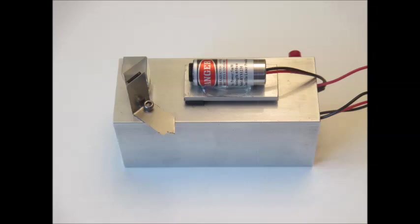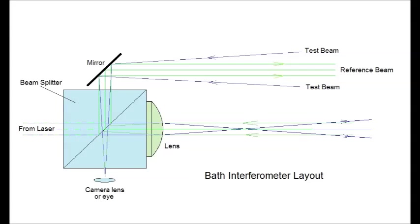I use a 10 millimeter beam splitting cube from Surplus Shed and a 10 millimeter focal length plano-convex lens. You can get those for under $22 from Surplus Shed. I got a 650 nanometer laser diode module from eBay for $2 and some change for the light source, and I cut a piece of first surface mirror from stock I had laying in my junk drawer.